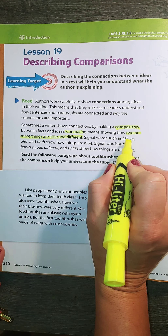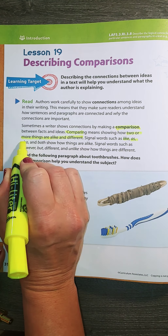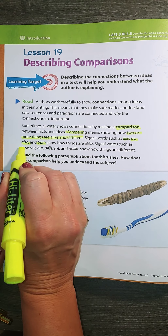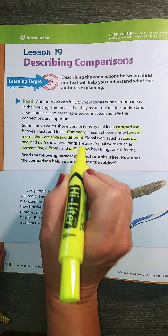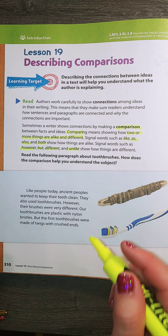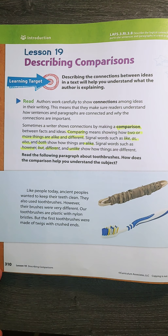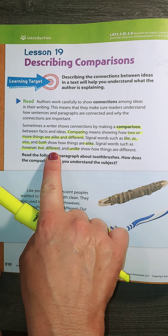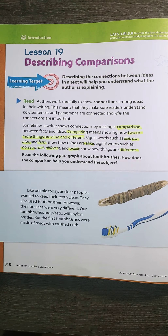There are signal words like: as, also, both, however, but, different, and unlike, which can help us as readers to know the difference. Like, as, also, and both help me to show how things are alike or similar. However, but, different, and unlike help me see how they are different.